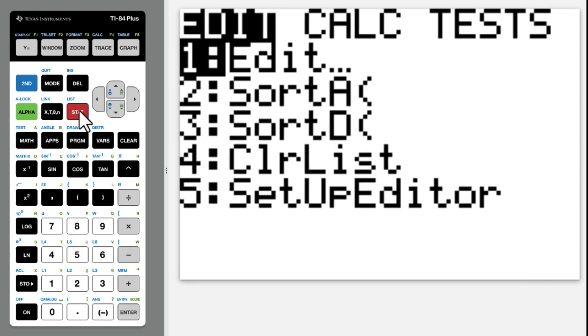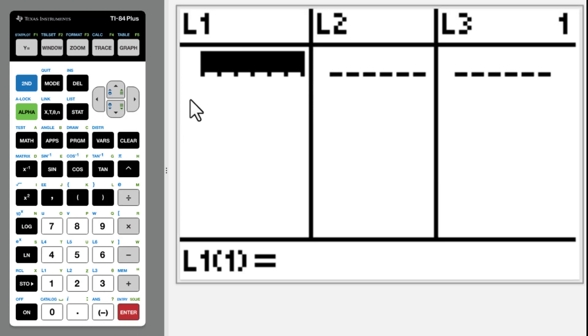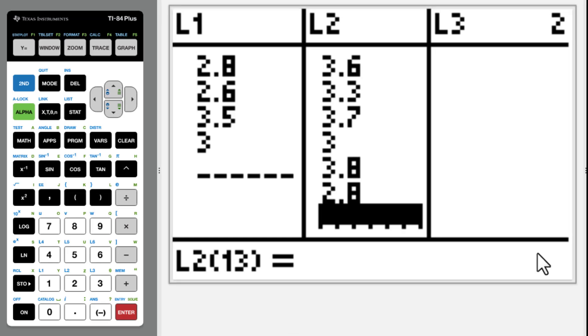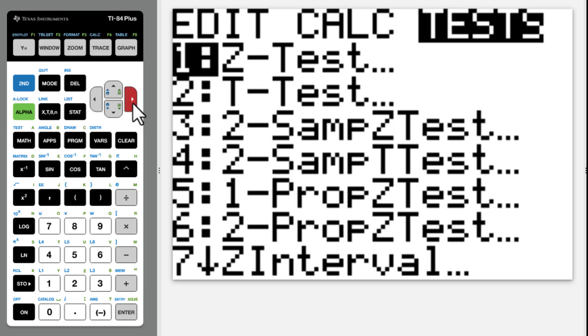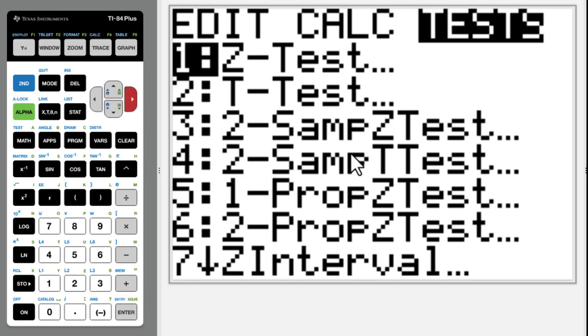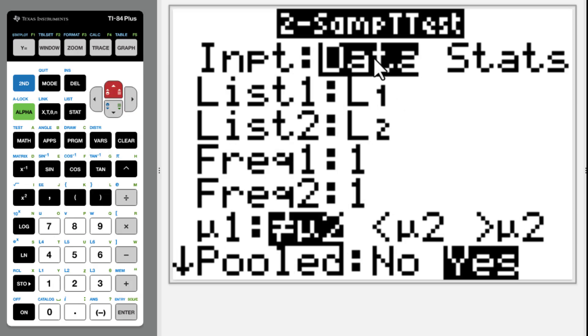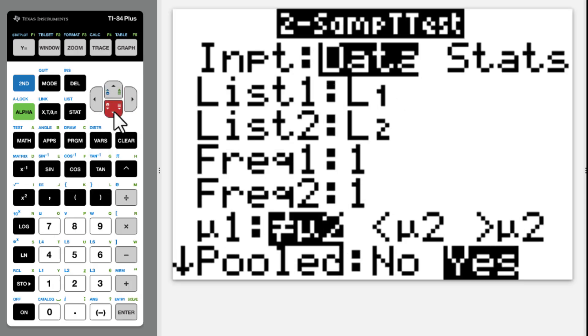Go to Stat, put the data in L1, L2. After we put the data into L1, L2, stat again, go to Test, two sample t-tests. Highlight data, L1, L2, 1, 1.